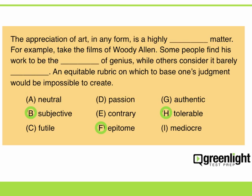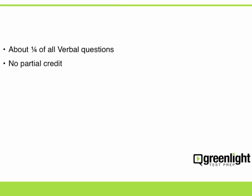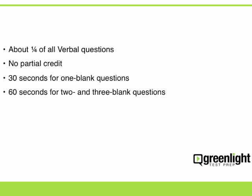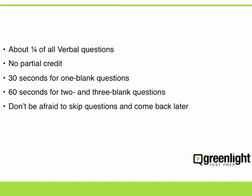As you can see, the two- and three-blank questions can be quite time-consuming. Remember that in each verbal section, we have 30 minutes to complete 20 questions. We might then assume that we have 90 seconds for each question. However, don't forget that we can expect to see three to five reading comprehension passages, and it can take a lot of time to read and interpret these passages. So try to keep to a limit of about 30 seconds for the one-blank text completion questions, and 60 seconds for the two- and three-blank questions. Also, keep in mind that we can skip questions and return to them later, so we should never linger on questions that we aren't sure how to answer.